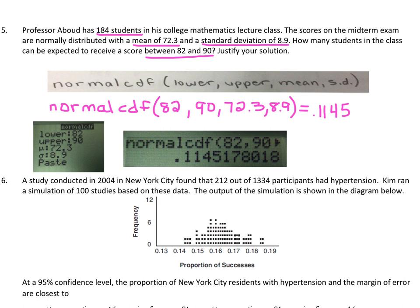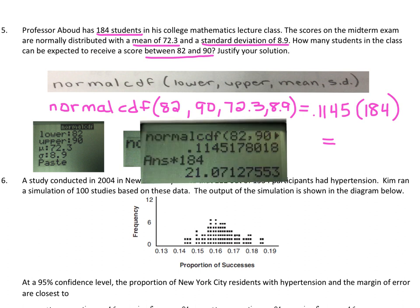If they had asked for a percent, we'd move the decimal over twice to get about 11.45%. But they ask how many students, so we multiply the probability by the number of students in the class. Since there are 184 students, multiply 0.1145 by 184. In the calculator, just hit times 184 to use the previous answer, and you get approximately 21 students.